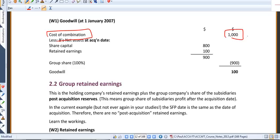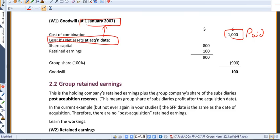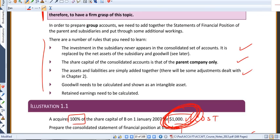So, that's what we paid. But what was B worth at the date of acquisition? Well, here, the date of acquisition is the 1st of January 2007.